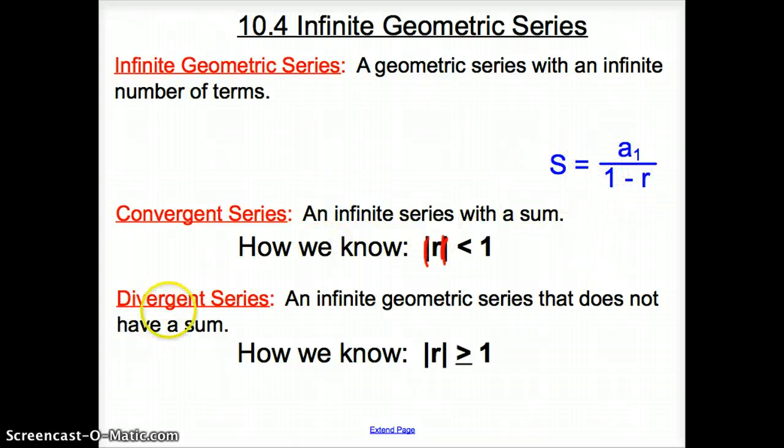And then our next series is a divergent series where we have an infinite geometric series that does not have a sum. And how do we know this is that if the R is bigger than or equal to 1. If it's equal to 1, it is divergent.